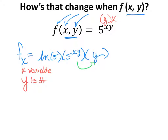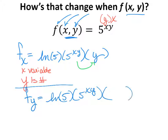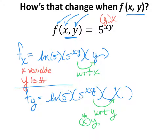Now let's do the partial derivative with respect to y. f sub y: we take the natural log of the base, keep the exponential exactly the way it is, and chain rule out the derivative of the exponent with respect to y. When we see xy, x is just a number — it's a coefficient of y. The derivative of a linear function with coefficient x is just x. These terms are all multiplications, so they can be in any order — you could put y out front, or rearrange however you like.